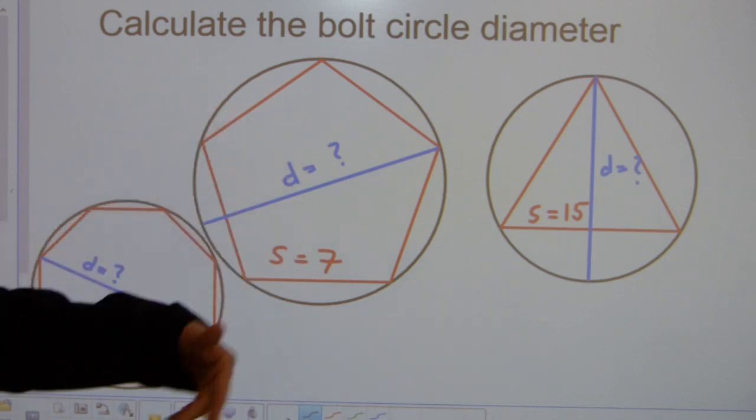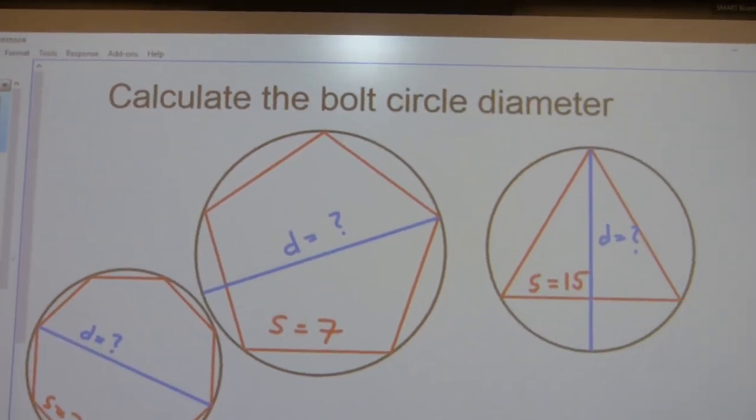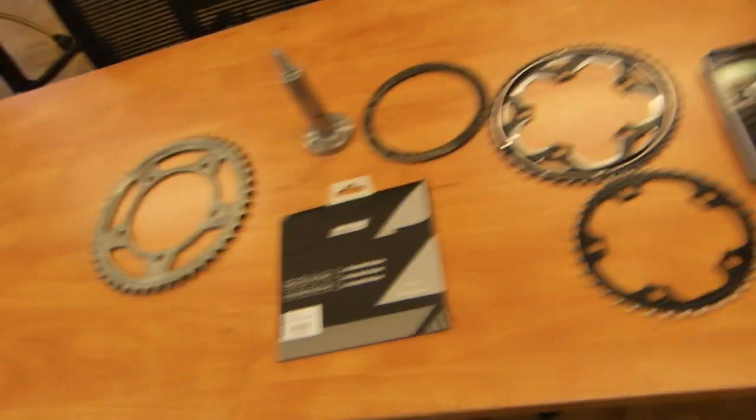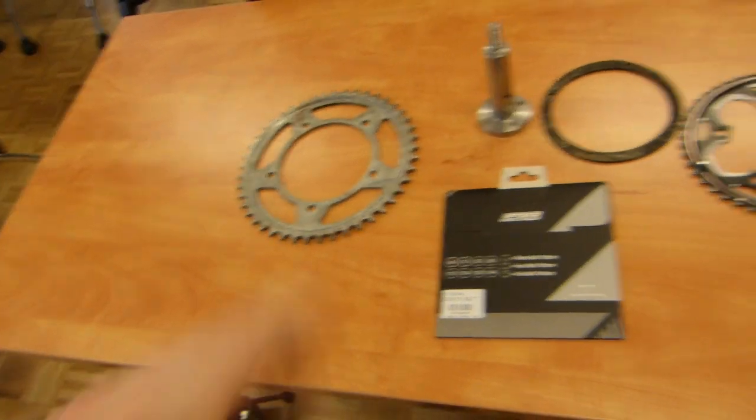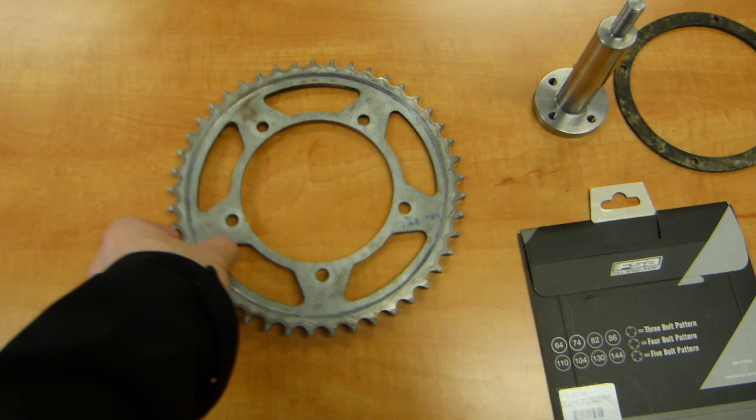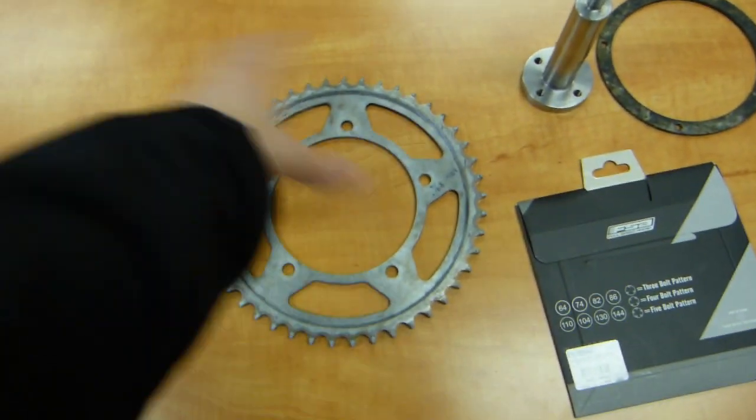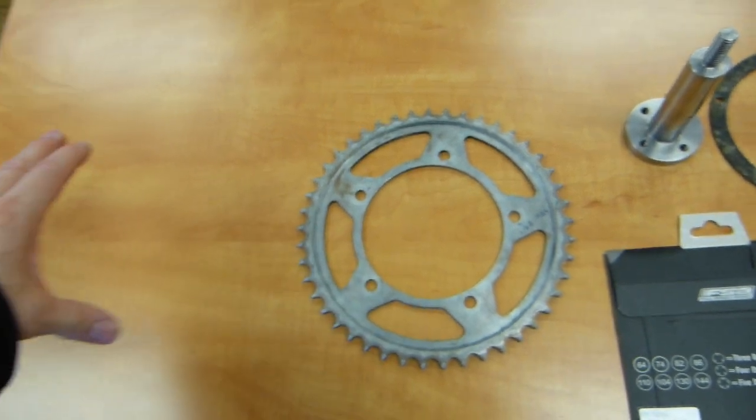In terms of practical application, let me give you a visual example here. I have some parts on this desktop that all feature bolt circle diameter or pitch circle diameter. This is a sprocket from a motorcycle's rear wheel that drives the rear wheel. The chain goes around it and connects to the engine.